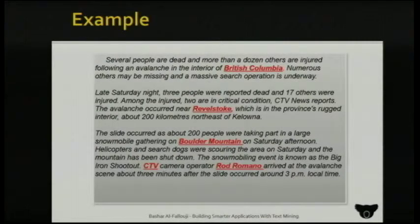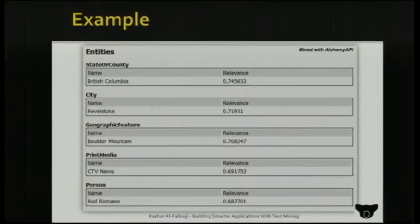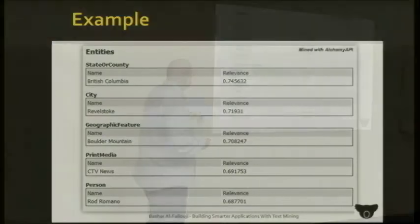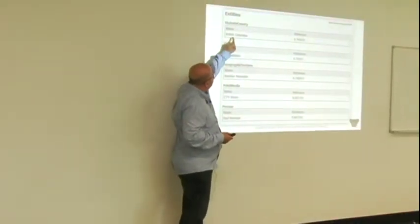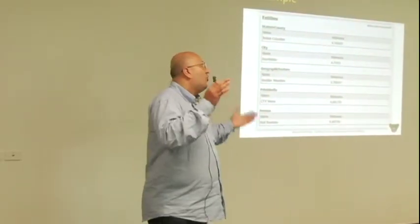Let's take an example. If we take a piece of text, we can see it mentions British Columbia — a province in Canada — Revelstoke, that's a city, Boulder Mountain, that's a location, and CTV, which is the name of a TV channel in Canada, plus a person. When you expose that — this was done with Alchemy API — it returns a response in JSON, XML, or whatever output format you selected. It will tell you: found as a state or country, British Columbia, and it gives you a relevancy number. This score always goes from zero to one, and it indicates how confident the text mining engine is about the result.